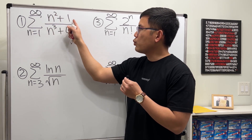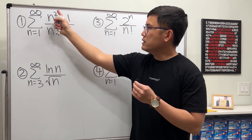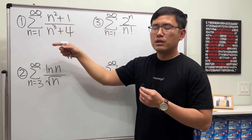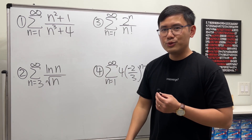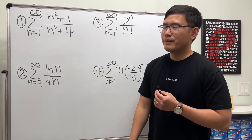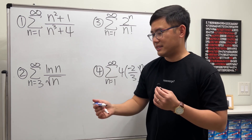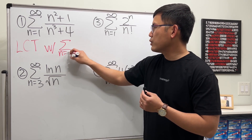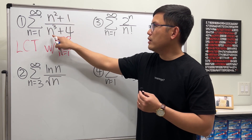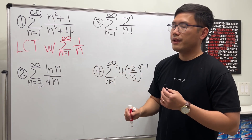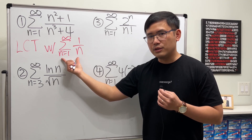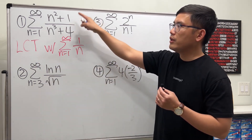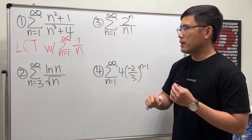Number one: the series as n goes from 1 to infinity of (n² + 1) / (n³ + 4). We have a rational expression, and if you ignore the +1 and +4, this is just n²/n³, which reduces to 1/n. For rational expressions, try the Limit Comparison Test (LCT) — compare with the series of n²/n³, which reduces to 1/n, the harmonic series, which diverges. If the LCT limit condition is met, this series also diverges.